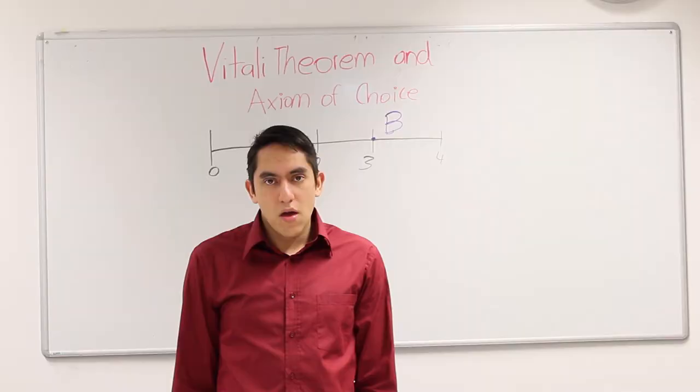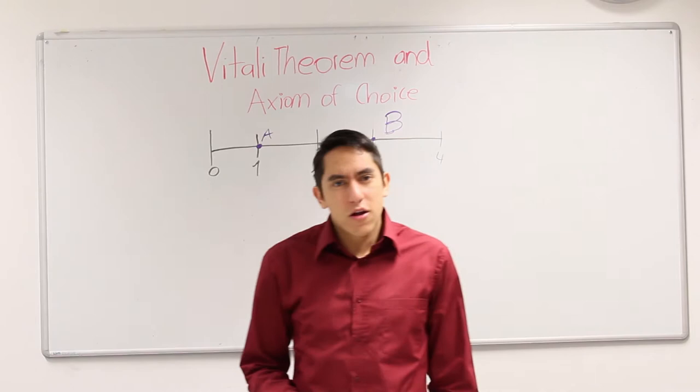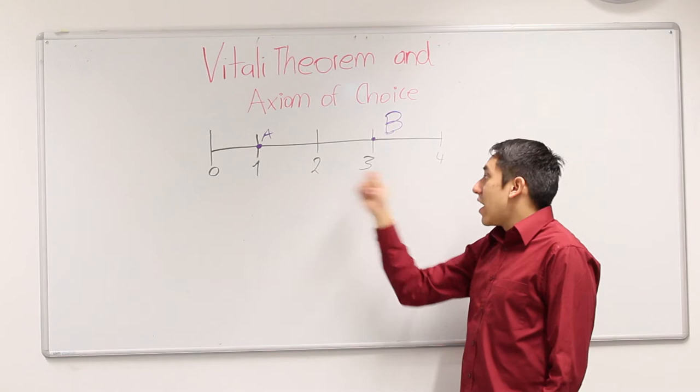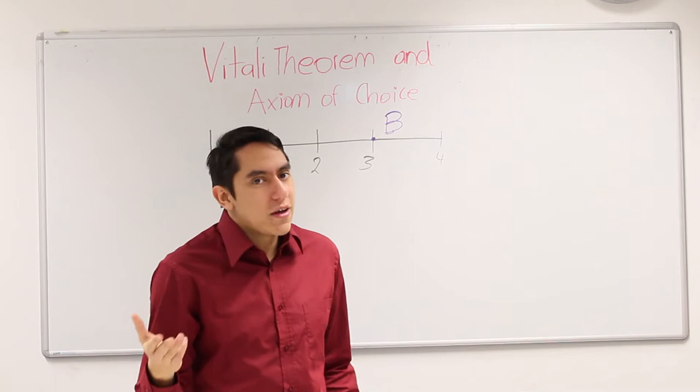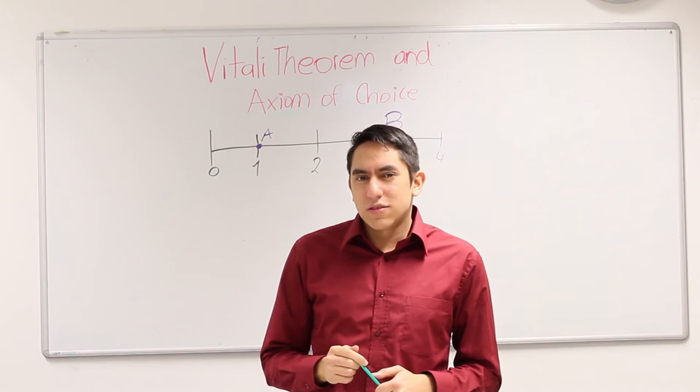All we can see has a size. For example, this whiteboard is 1.5 meters long, or this pencil is 12 centimeters, or the distance between A and B has size 2. Sets also have a size. For example, the set of natural numbers has a size 0. They are Lebesgue measurable. But what if I say that there exist such sets that do not have a size? Sounds crazy, not too much.